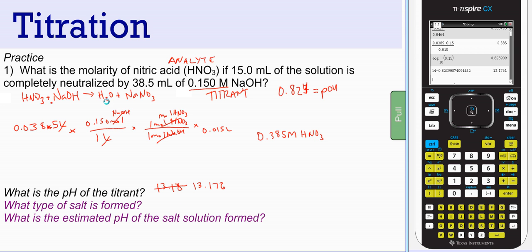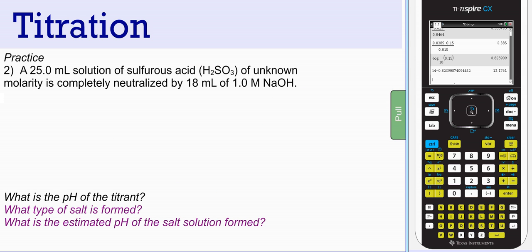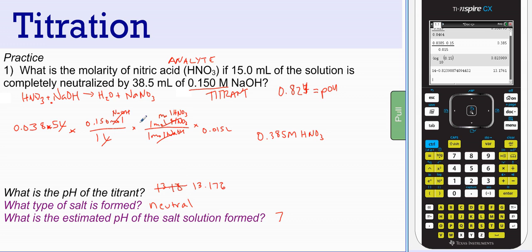What type of salt is formed? Sodium nitrate. The parent base is a strong base, sodium hydroxide. The parent acid is a strong acid nitric. So it's going to be a neutral salt. That's the estimated pH of this salt solution formed, 7. And that's because this is a neutral salt.